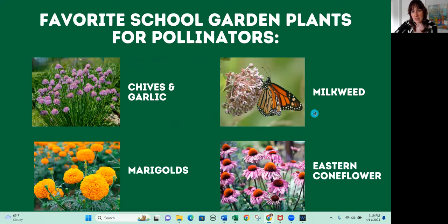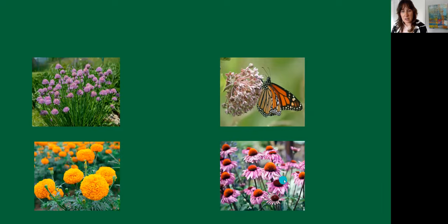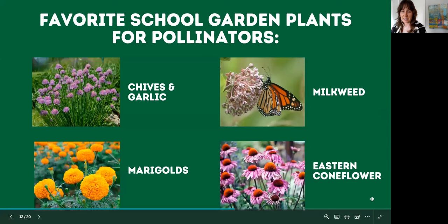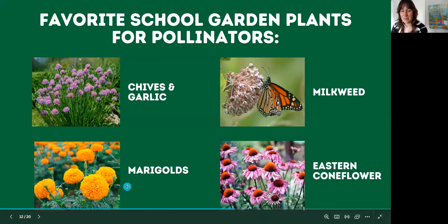Two other great ones are milkweed — there is a native milkweed to Georgia called swamp milkweed with beautiful yellow flowers. Most of us know about the monarch and milkweed as companions, so it's lovely to support milkweed in your garden to encourage and feed monarch butterflies. Another great native plant is the Eastern Coneflower or Echinacea. It encourages native pollinators, is helpful for your soil, and it's easy for students to see insects on it. It lasts from May through October or November, and marigolds are similar — they last a very long time in Georgia.